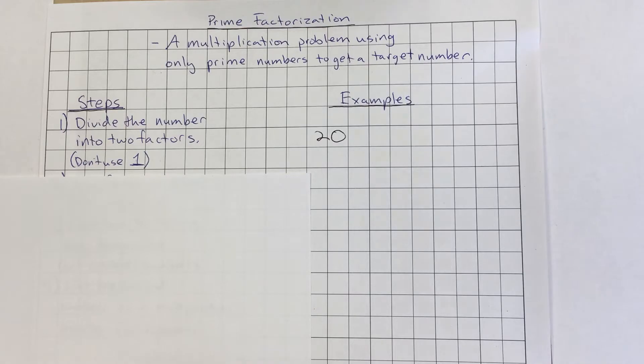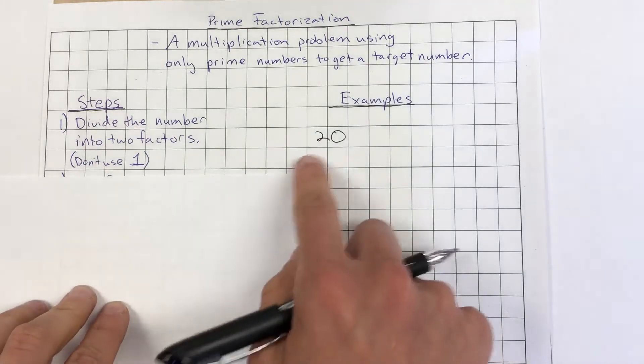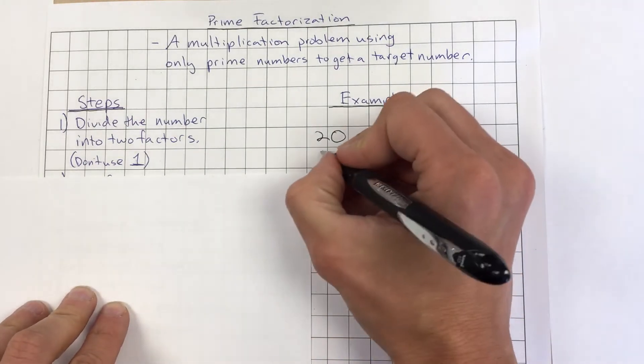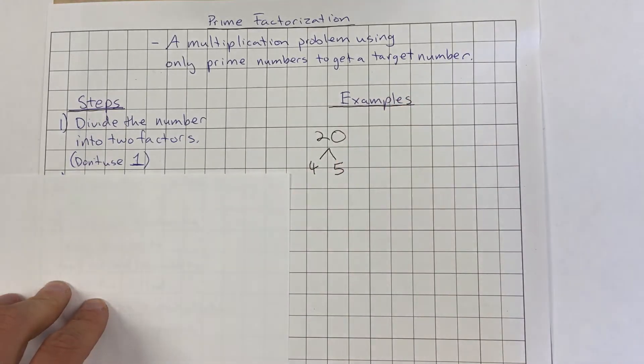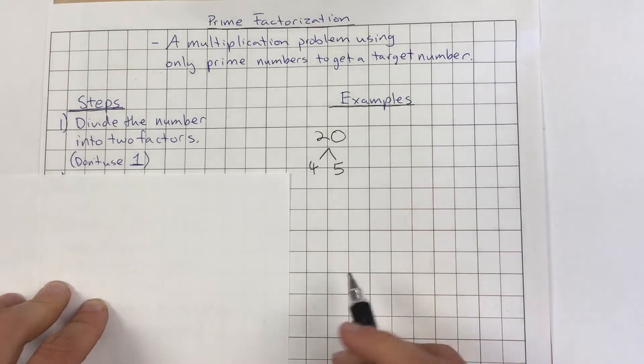Again, factors are two numbers that when multiplied will get you that number. So what two numbers could we multiply to get 20? We could think 4 and 5. And if we have 4 and 5, so 4 times 5 equals 20, those are the factors.